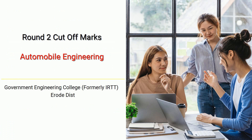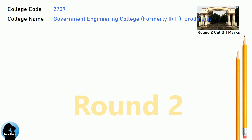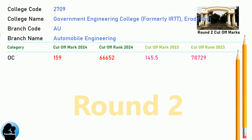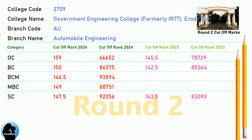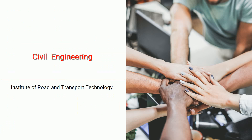DNEA 8.5 Reservation Cut-Off for Government Engineering College, formerly IRTT, Erode District in Automobile Engineering. DNEA 9.5 Reservation Cut-Off for Government Engineering College, formerly IRTT, Erode District in Automobile Engineering.